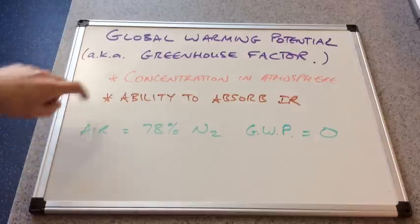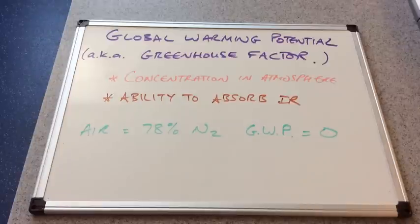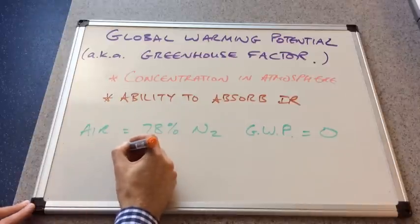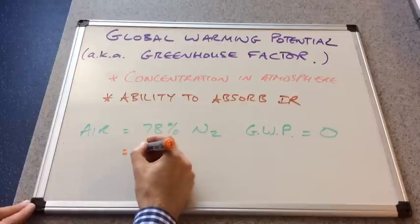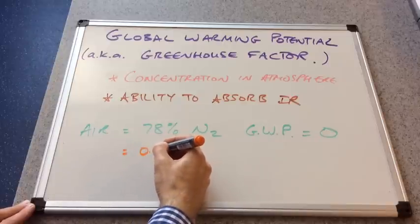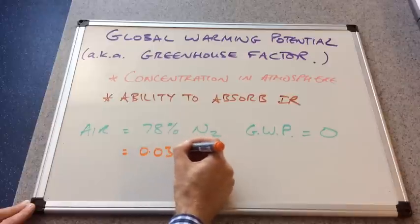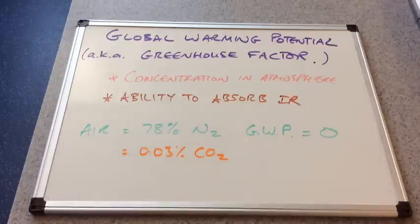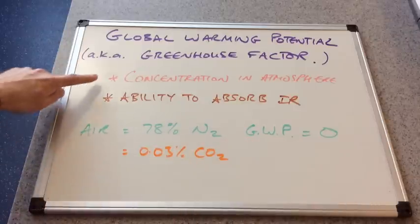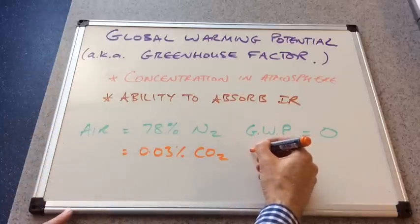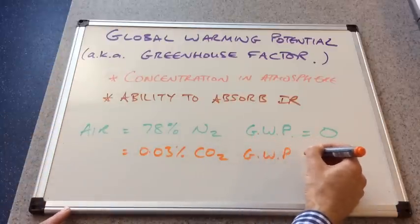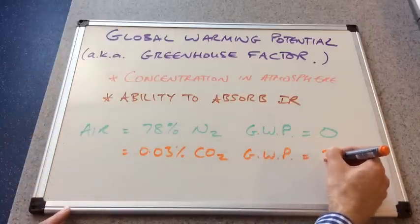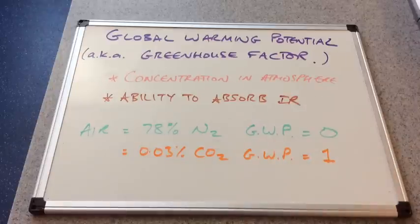Now if we look at CO2, that's 0.03 percent roughly. Now that's a very low concentration. Its global warming potential, GWP, carbon dioxide is classed as one. So that's effectively the standard that scientists use.